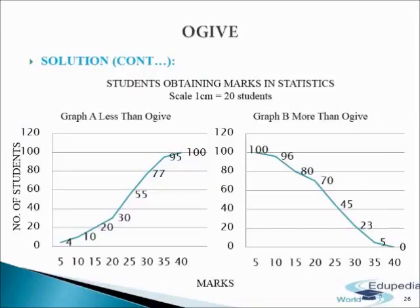Now we will plot the cumulative frequency data on a graph. The heading is 'Students Obtaining Marks in Statistics', and the scale is 1 cm equals 20 students on the y-axis. On the x-axis we have taken marks, and on the y-axis we have taken number of students. Graph A shows less than Ogive and Graph B shows more than Ogive. In less than Ogive, the cumulative total tends to increase: 4, 10, 20, 30, 55, as calculated in the table. In more than Ogive, the cumulative total tends to decrease: 196, 80, 70, as calculated in the table. This is how we will make Ogive for less than and more than type.